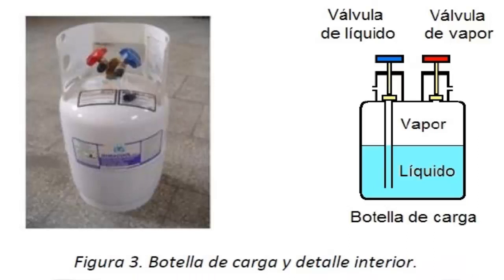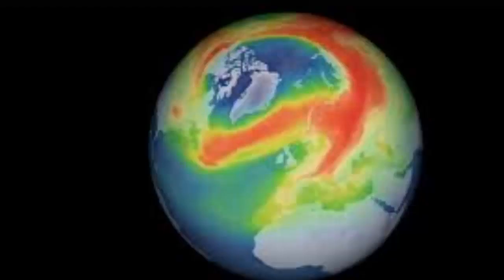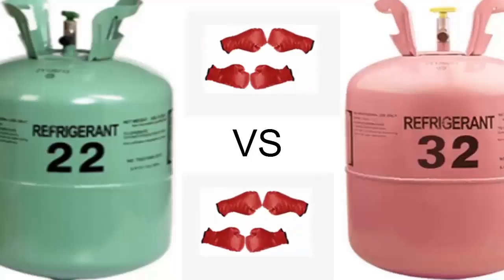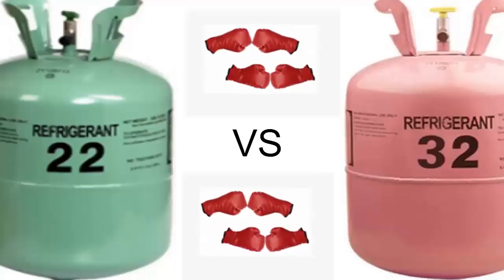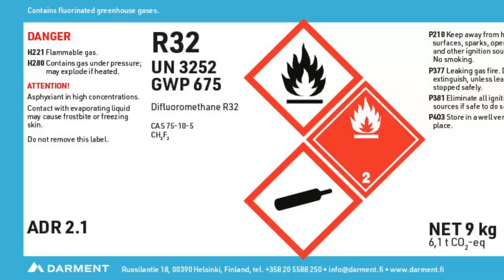The main drawback of R22 lies in its harmful impact on the ozone layer, which is why it is subject to environmental limitations. R22 exhibits a Global Warming Potential of 1760, whereas R32 does not harm the ozone layer and has a GWP of 675.